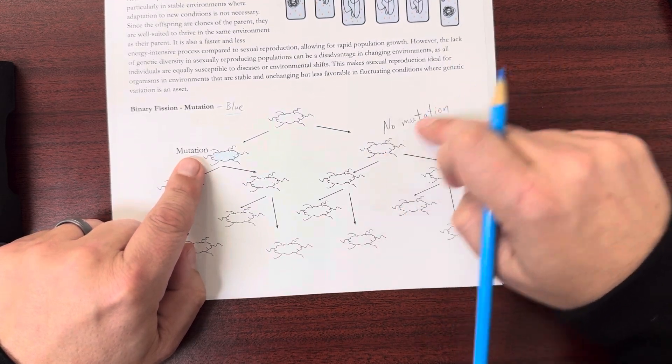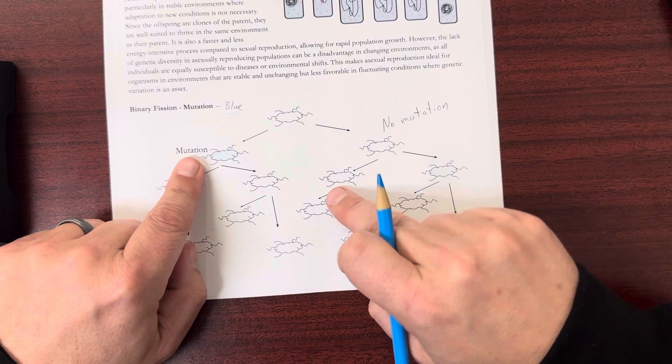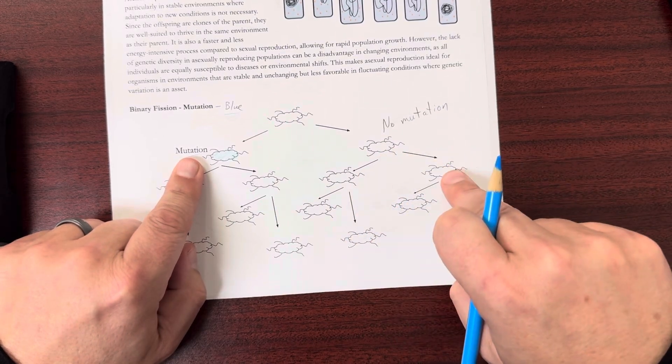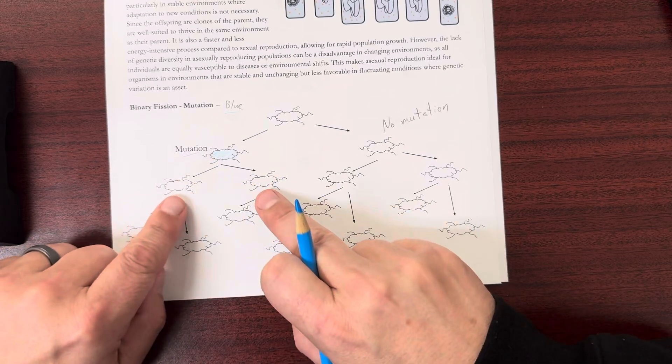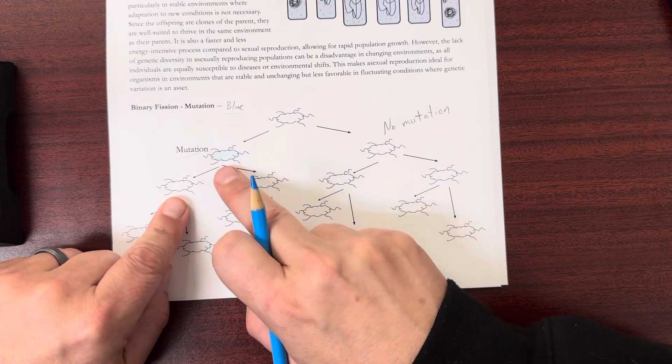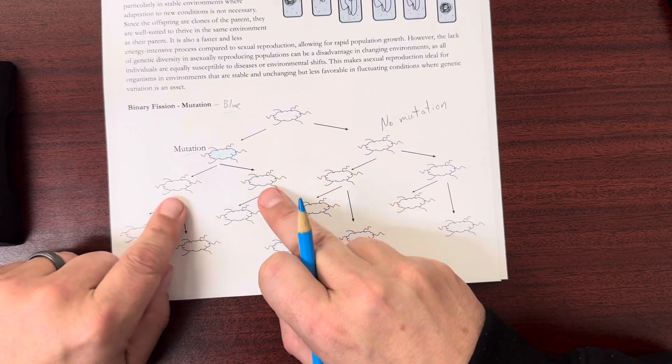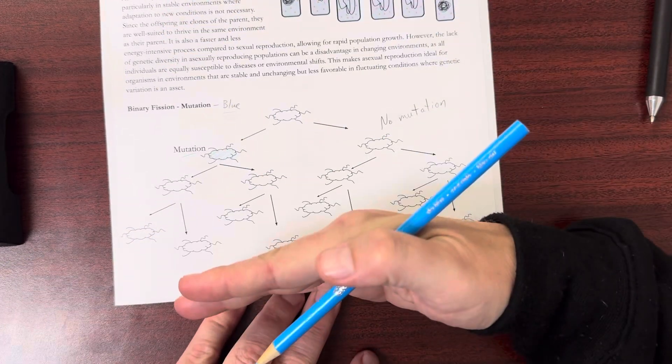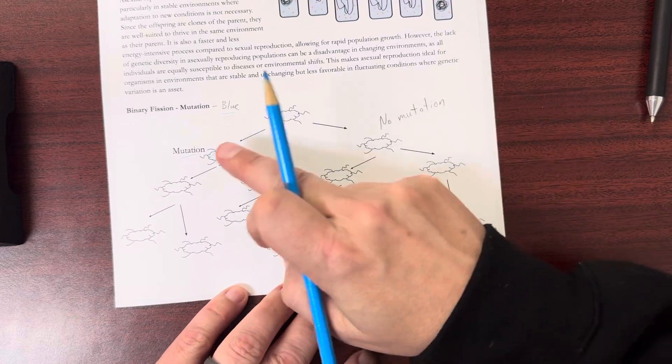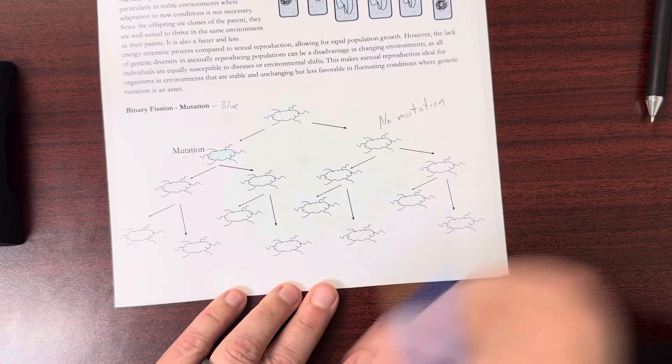Now, I already said this one doesn't have that mutation. So it wouldn't be able to really pass it along. So none of these would have it. But what about this? These two are replicas of this first one. So they would both have it. I would shade both of those blue. And you just work all the way down, highlighting the ones in blue that have that mutation. Okay?